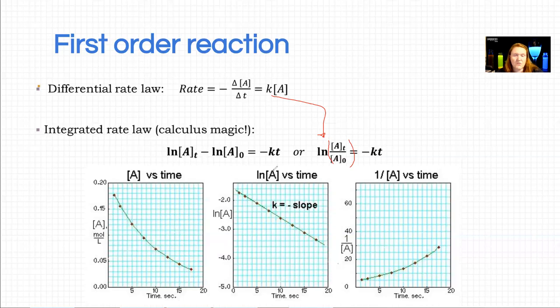This is a rule of logarithms, so that's where this comes from. So basically you go ln of the top minus ln of the bottom.